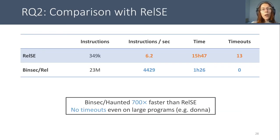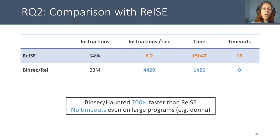How does our tool compare against standard relational symbolic execution? We did the experiment on our set of cryptographic primitives and report that our optimization is 700 times faster than standard relational symbolic execution. Where relational symbolic execution takes almost 16 hours and gets 13 timeouts, BINSEC-REL takes only one and a half hours and has no timeouts.